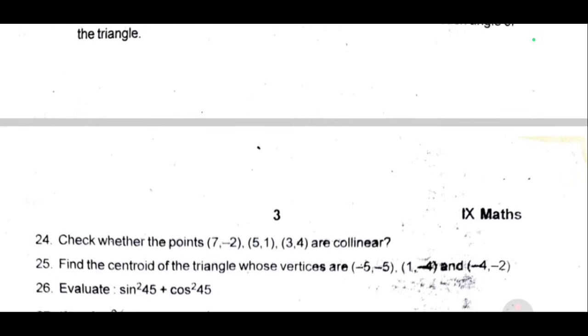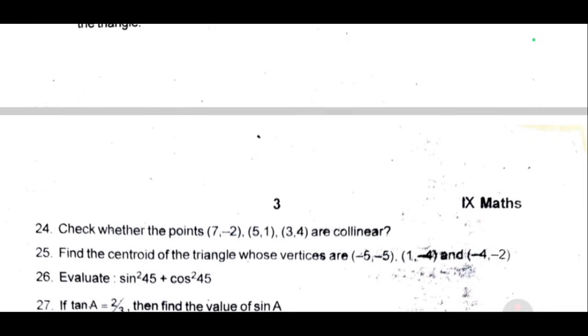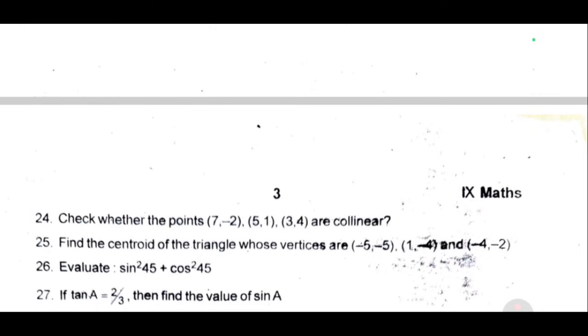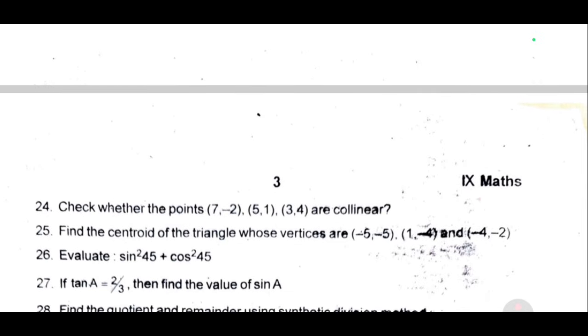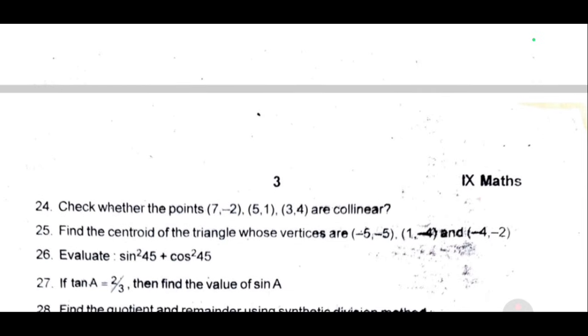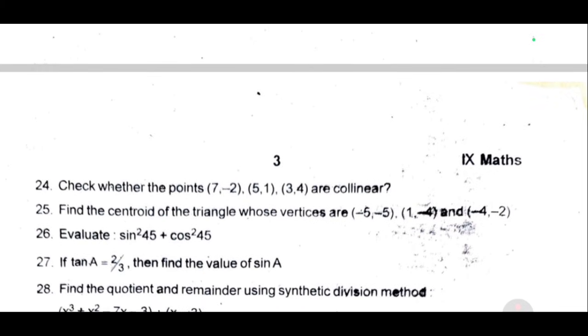24, check whether the points 7 comma minus 2, 5 comma 1, 3 comma 4 are collinear. 25, find the centroid of the triangle whose vertices are minus 5 comma minus 5, 1 comma minus 4, and minus 4 comma minus 2. 26, evaluate sin square 45 plus cos square 45. 27, if tan A equal to 2 by 3, then find the value of sin A.